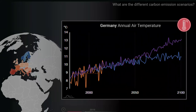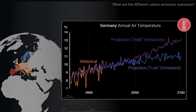Let us take a look at a typical plot from the tool. This plot shows Germany's average temperatures for each year, with the orange plot showing historical temperatures, but also two other plots which are projections into the future based on a combination of climate models. These plots are based on two different carbon emission scenarios: one high in purple and one low in blue.